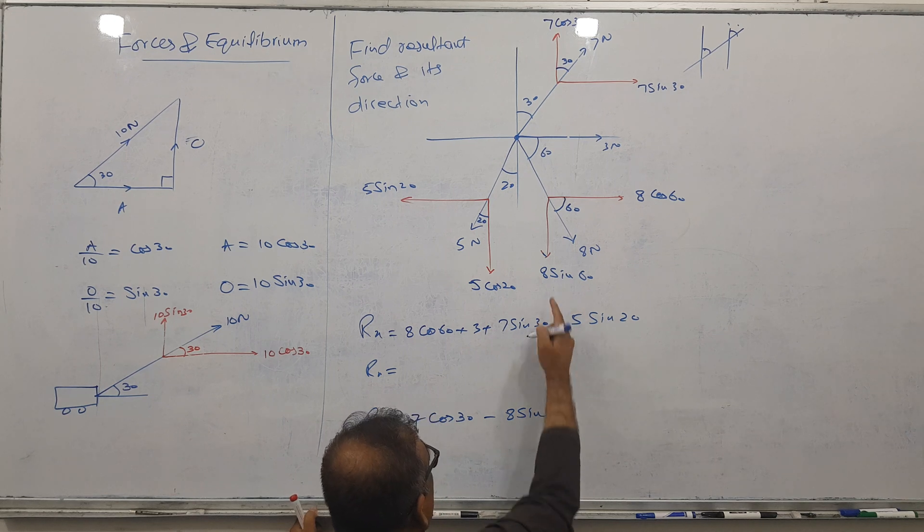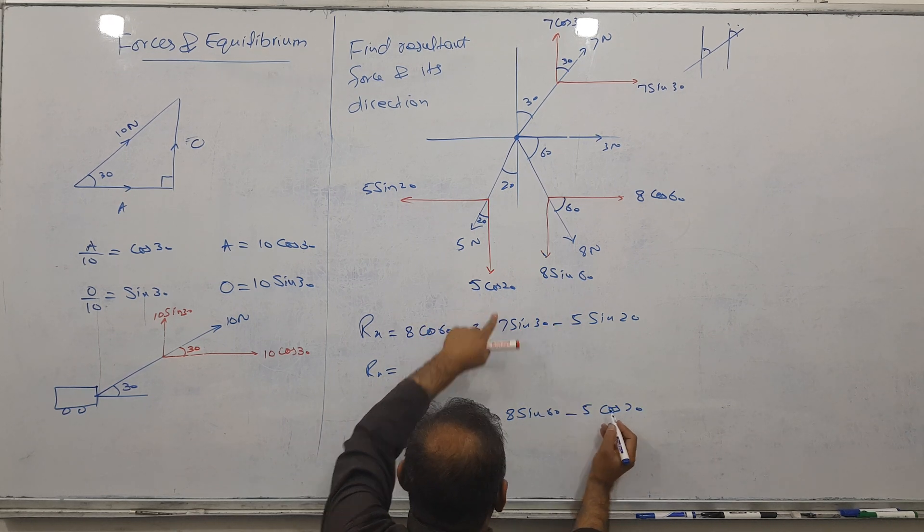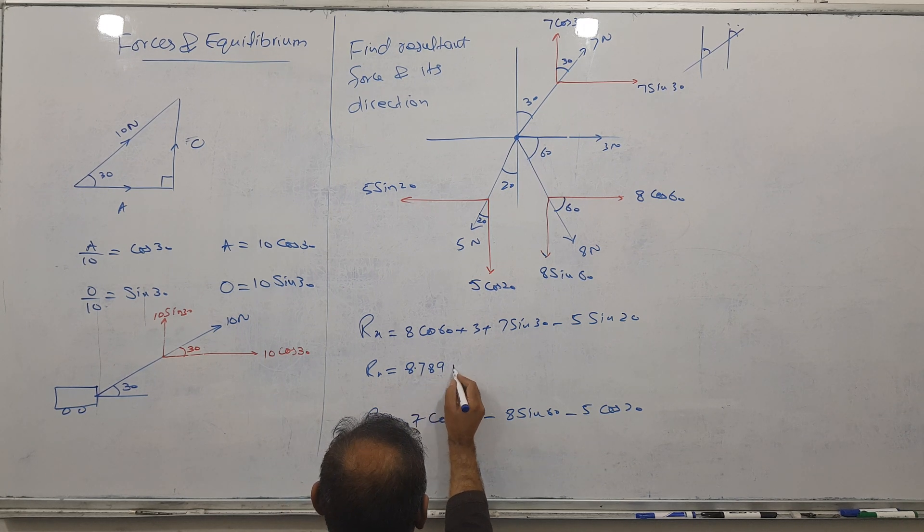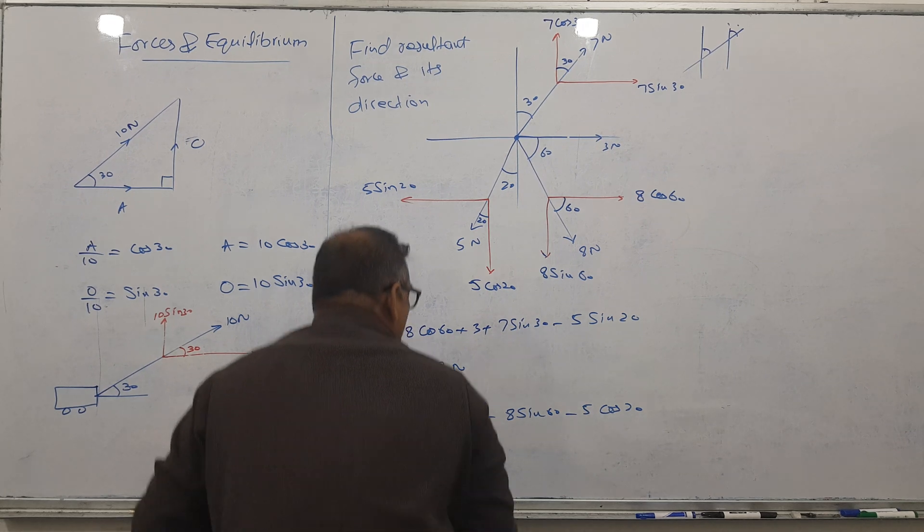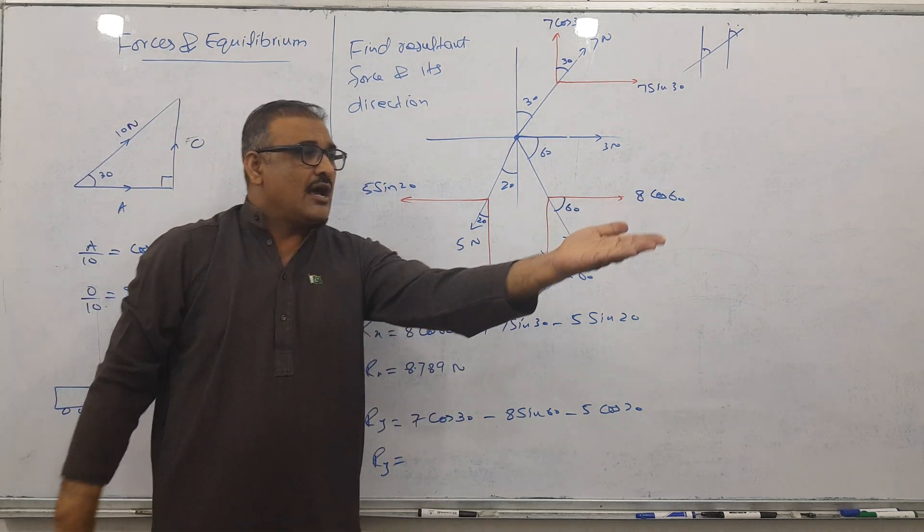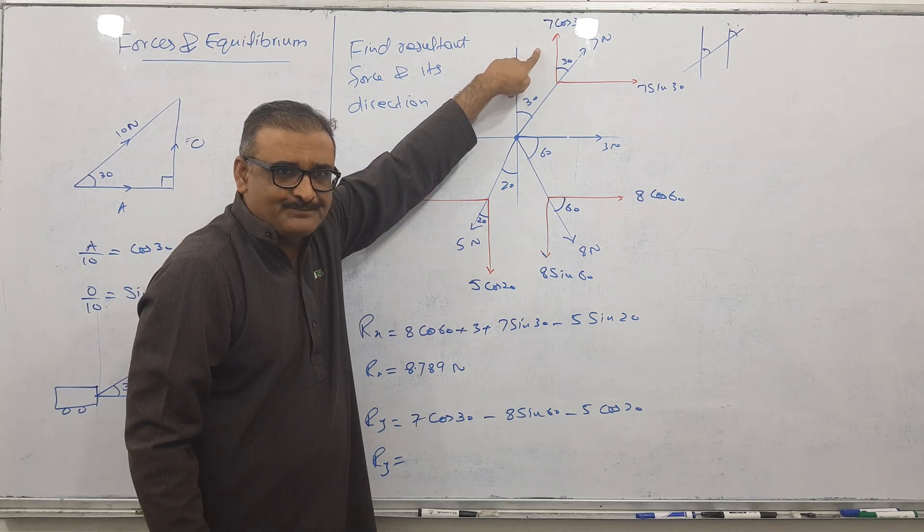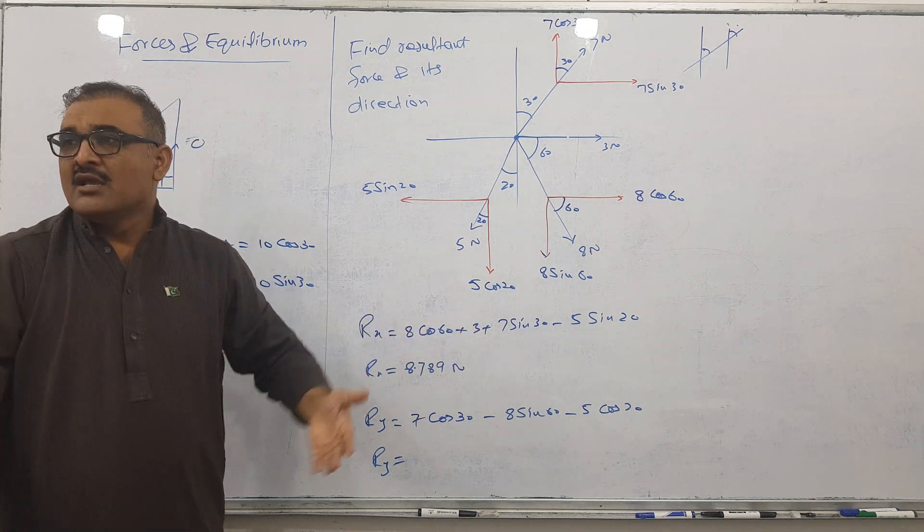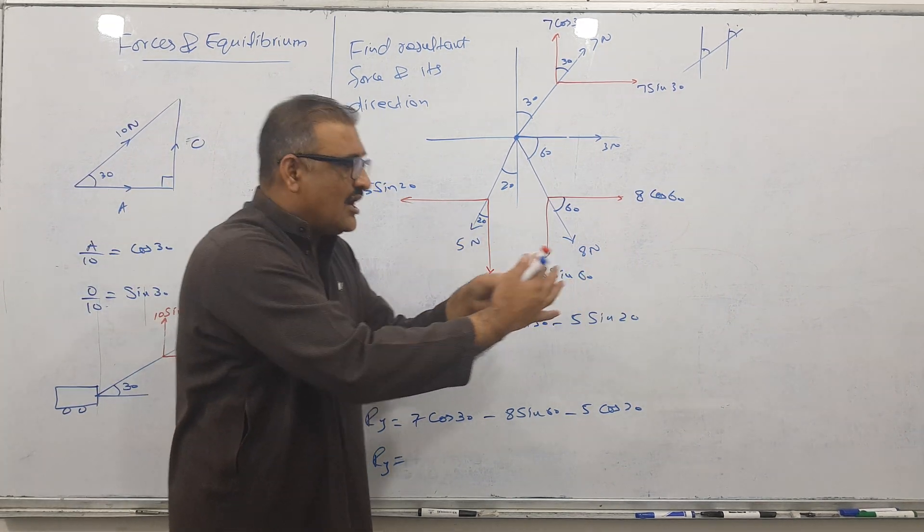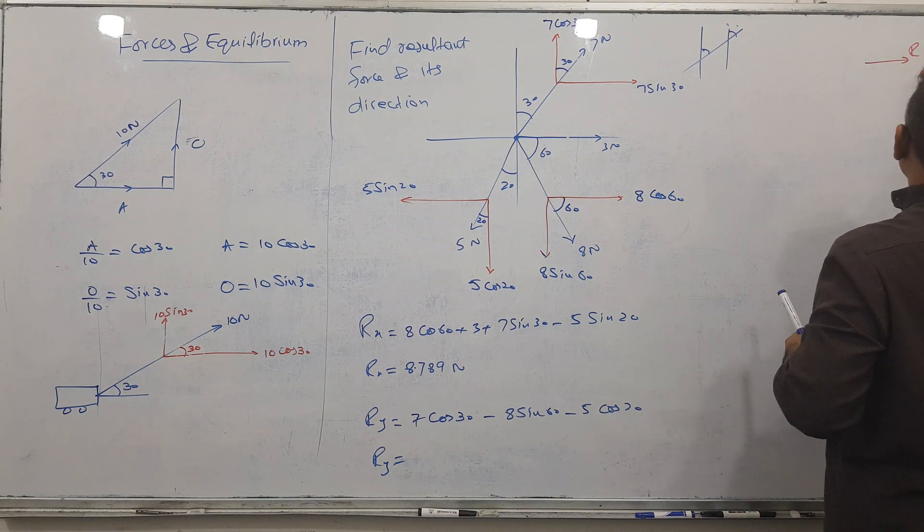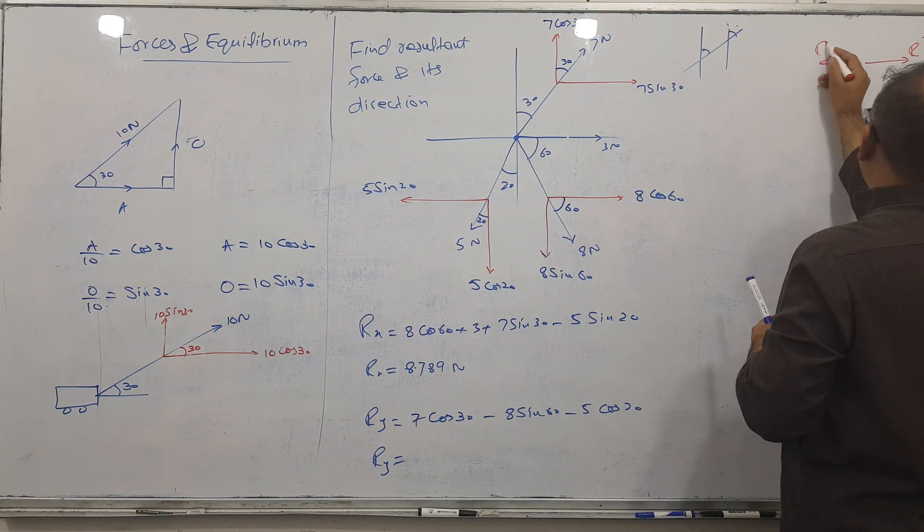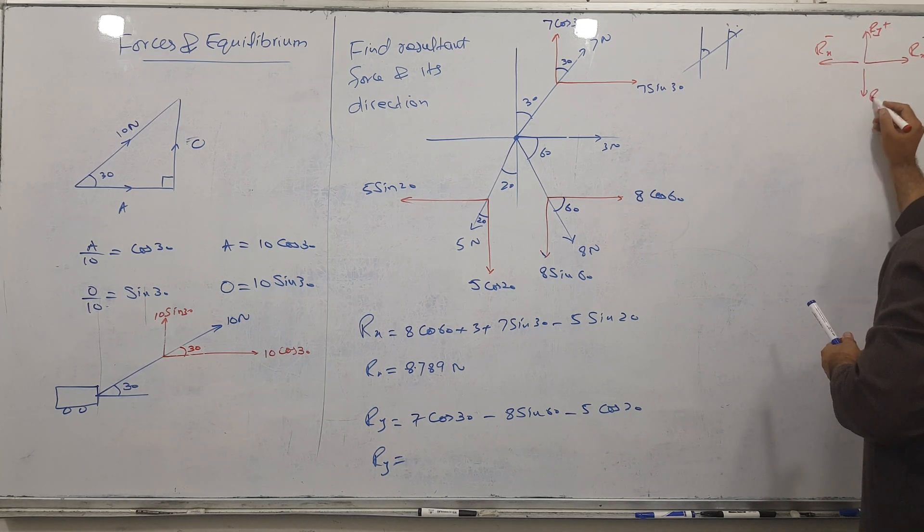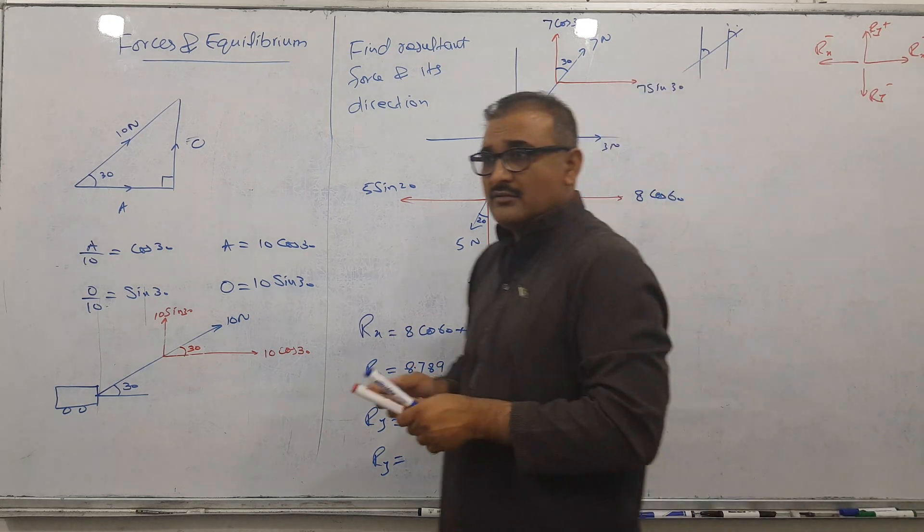Please give me the answer loudly. 8.789 Newtons. Similarly Ry - upward positive, downward negative. Right side positive, left side negative. Upward Ry positive, downward Ry negative. Please give the answer.